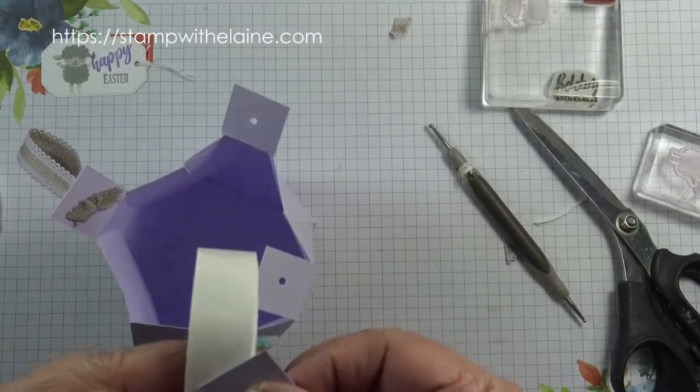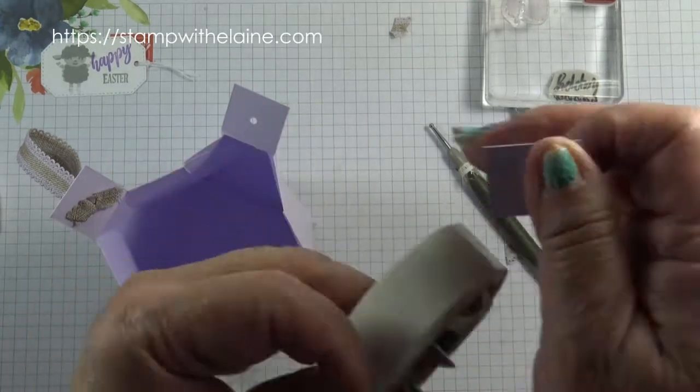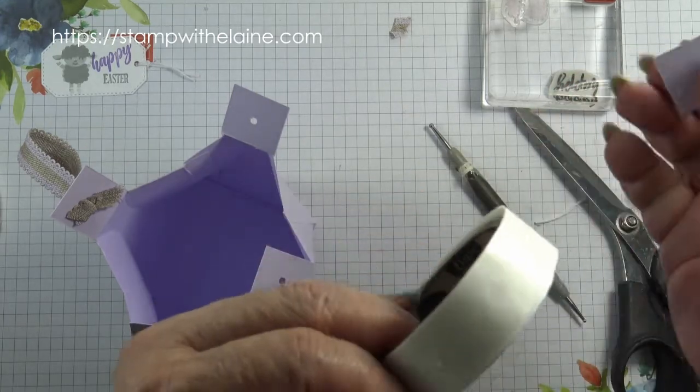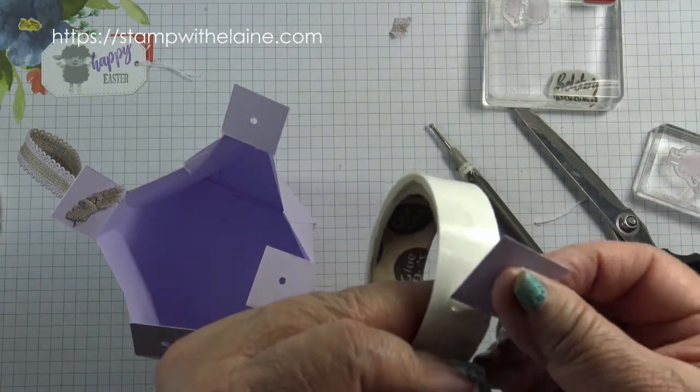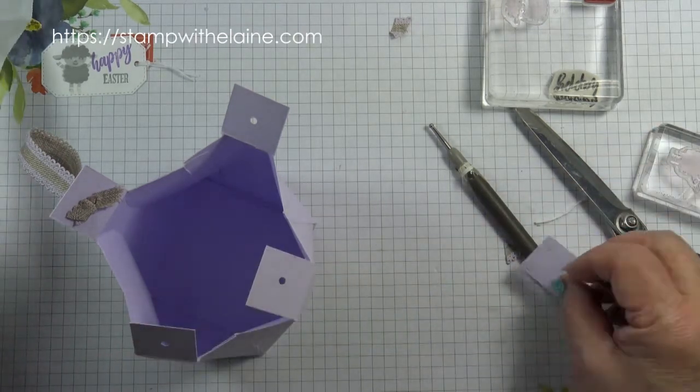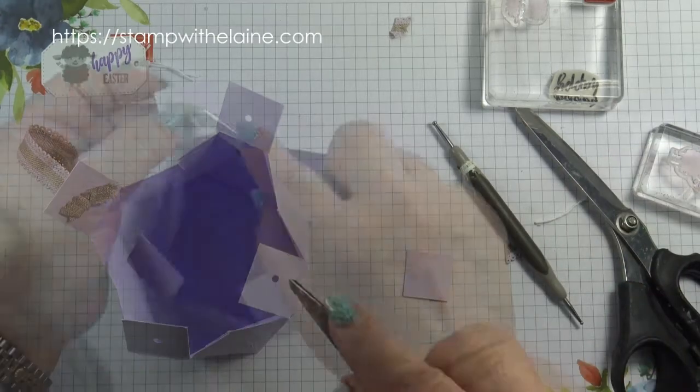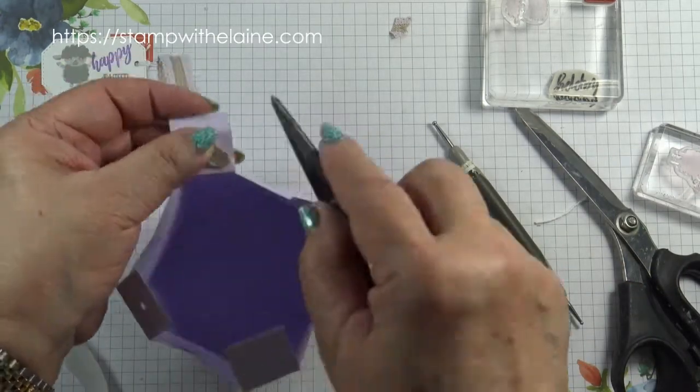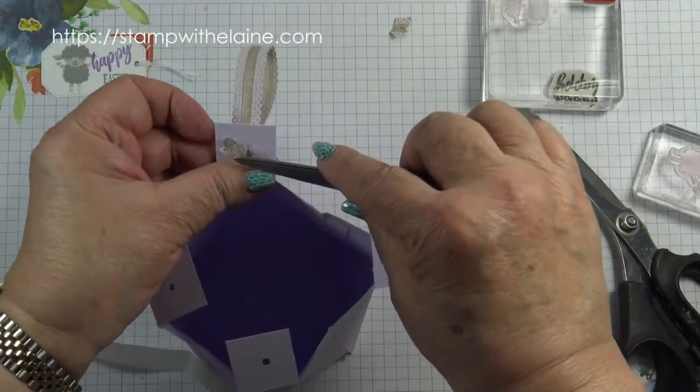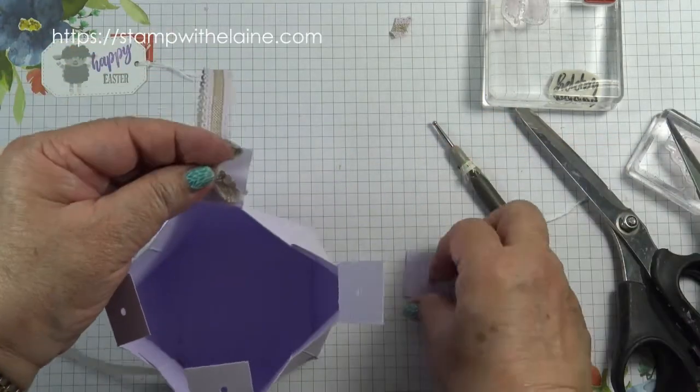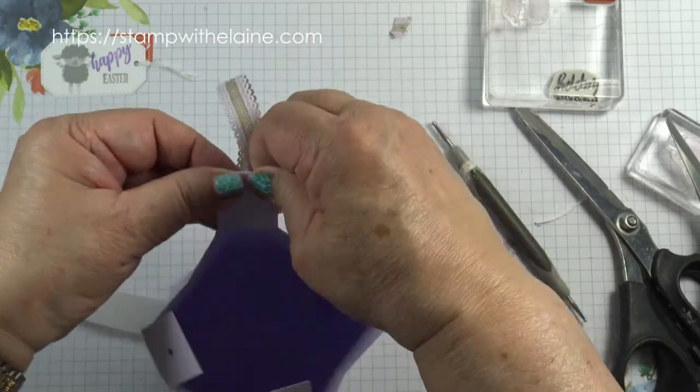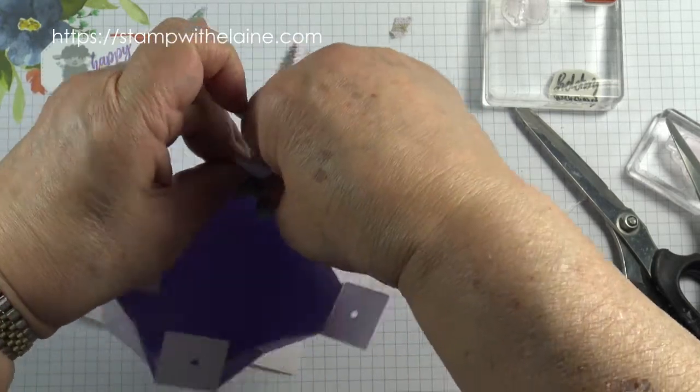Take the 1 inch square that you cut earlier and put a glue dot in the four corners and also some on the top of the ribbon here. Then pop this one on top to give it a neat finish and press down hard.